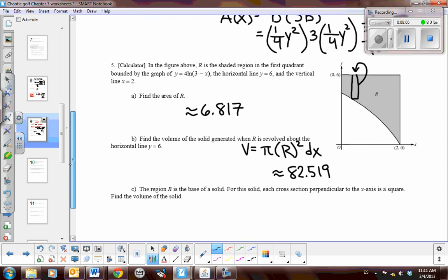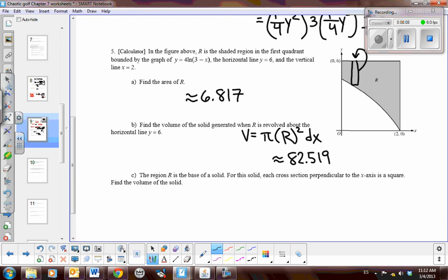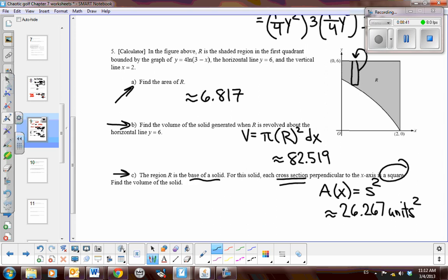And then part C, you can see that we're reviewing all of our stuff, because here we're finding the area between two curves, here we're finding the volume of a solid, and now we're going to find the volume if you're given a base and then you're given a cross-section. Now, for this cross-section, we're going to use squares, which we like, because we know that the area of a square is just side squared. So you have to find the length of the side, which would be the upper function minus the lower function, and then integrate it from zero to two. So just to let you know, your approximate decimal solution should be 26.267 units squared. Now make sure you show the setup and the work for all of these problems, and this should help you out.